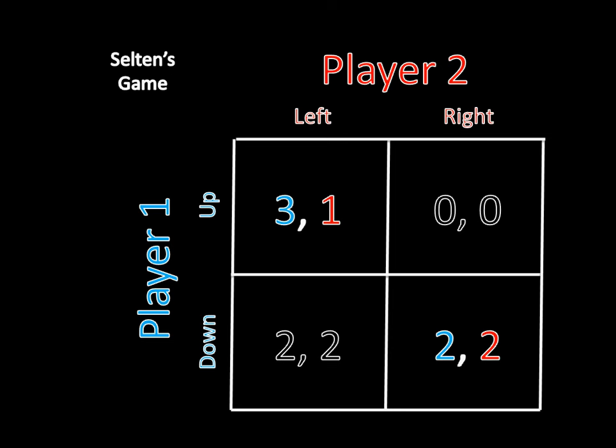And if you think back to some of our other games like Stag Hunt and Chicken and Battle of the Sexes, then you might recall that all of these games have actually had multiple Nash equilibria. So an important question in game theory is figuring out which equilibrium the players will actually play.